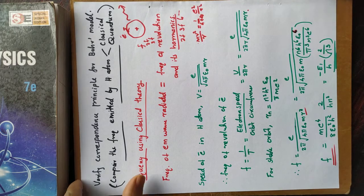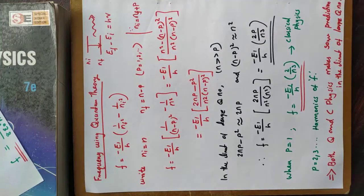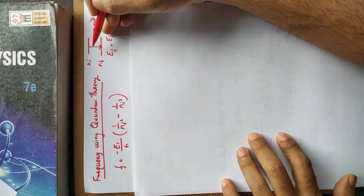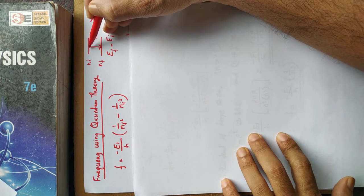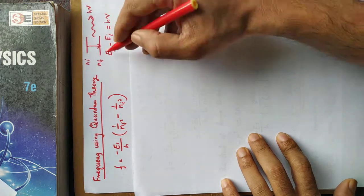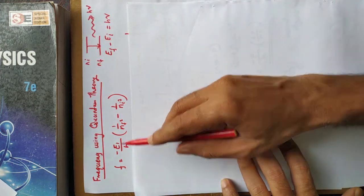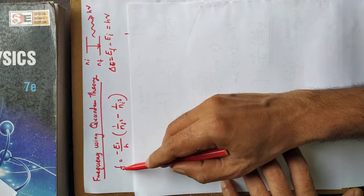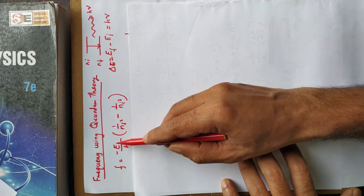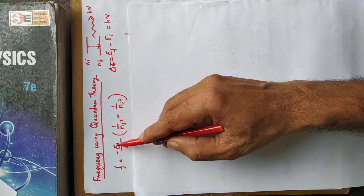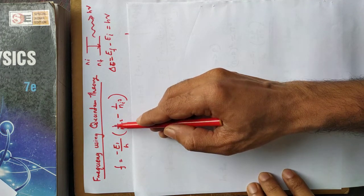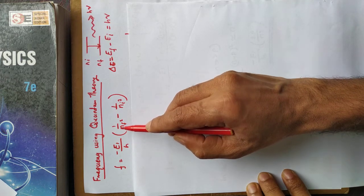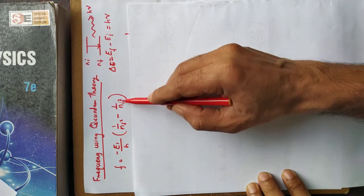Now let us derive the frequency expression from quantum theory. From the quantum relation ΔE = hf, the frequency is f = ΔE/h = (E_ni − E_nf)/h = (−E₁/h) · (1/n_f² − 1/n_i²), expressing the emitted frequency in terms of initial and final quantum numbers.